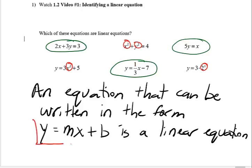If the equation can be written in this format—a y, an equals, a number, an x, a plus, and a number—then you know it's a linear equation. Now if you look at our three examples, only this one right now fits that format precisely: a y, an equals, a number, an x, a plus, or in this case a minus, and then a number.